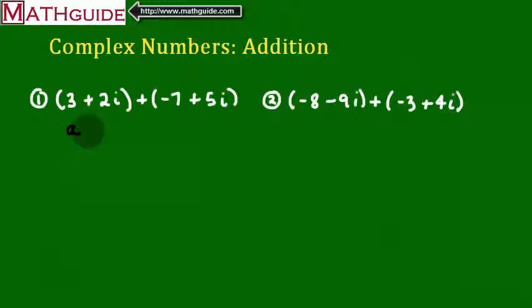All right, so once their complex numbers are in A plus Bi form, we could add them. Now, we're going to take these two problems, which right now are written down in horizontal form. They're kind of spread across to the right. We're going to change that. We're going to change them so that they're vertical, going up and down.